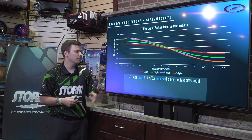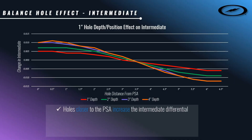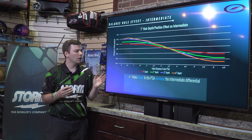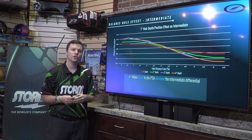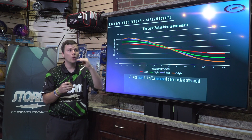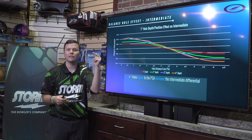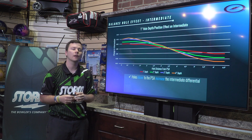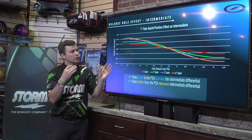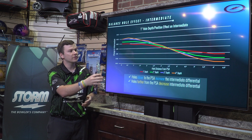Holes closer to the PSA increase the intermediate differential — that's why the lines are higher up on the left side of the graph. The PSA is going to be the highest RG value on the entire bowling ball, so if we're putting a hole through that we're raising it even higher than before, making the difference between that axis and any other axis significantly more — we're making it more asymmetrical. Holes further from the PSA decrease the intermediate differential.